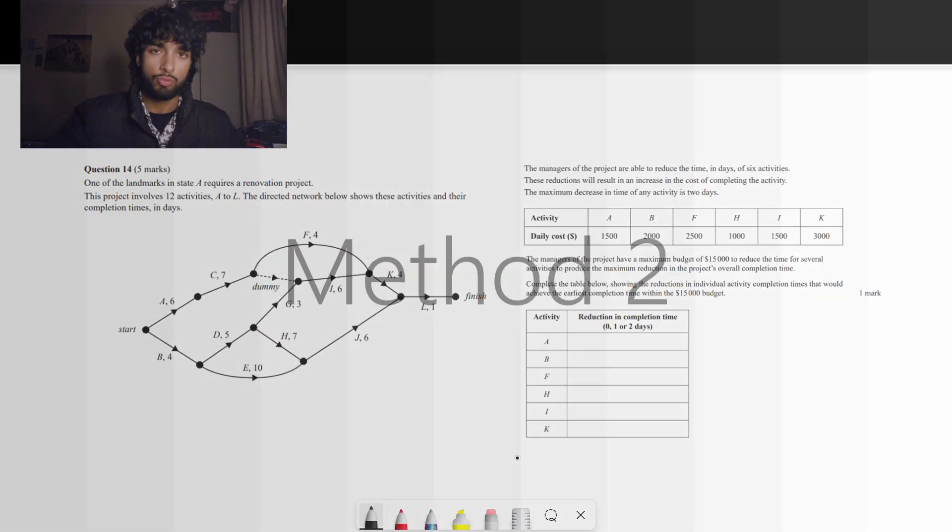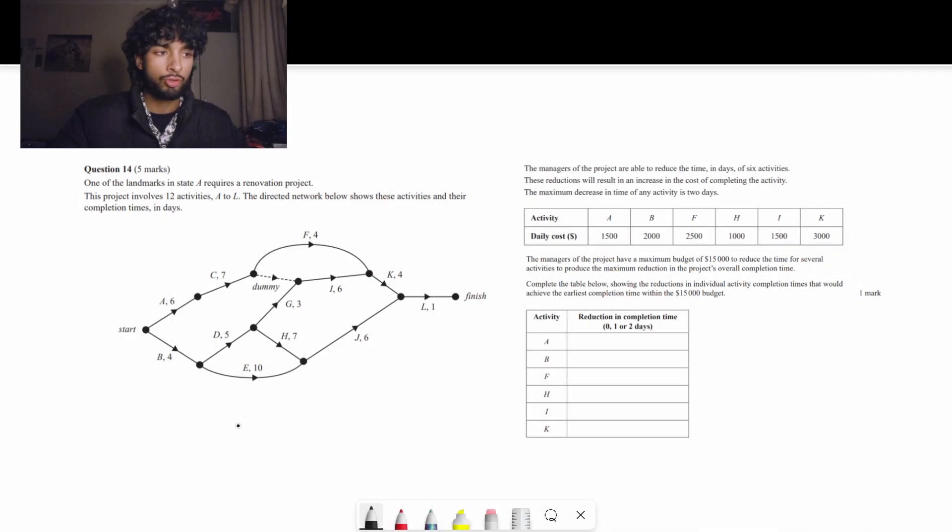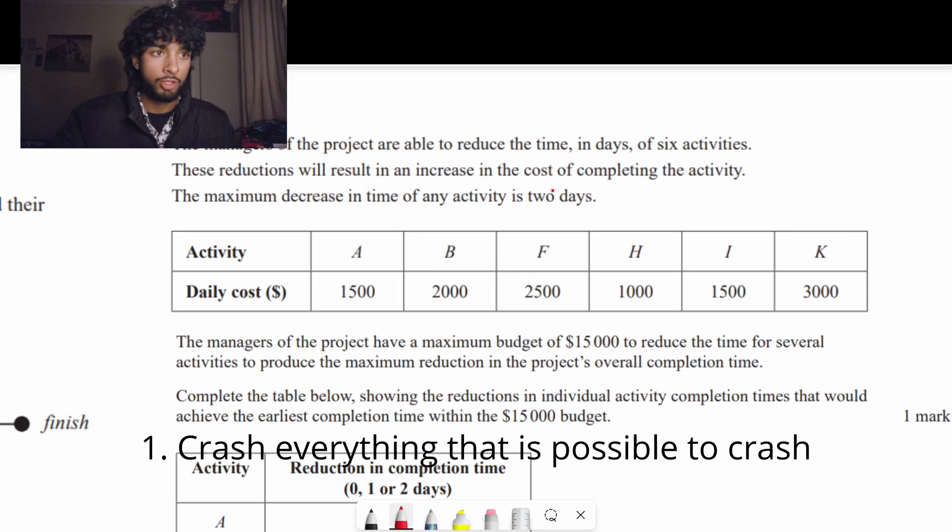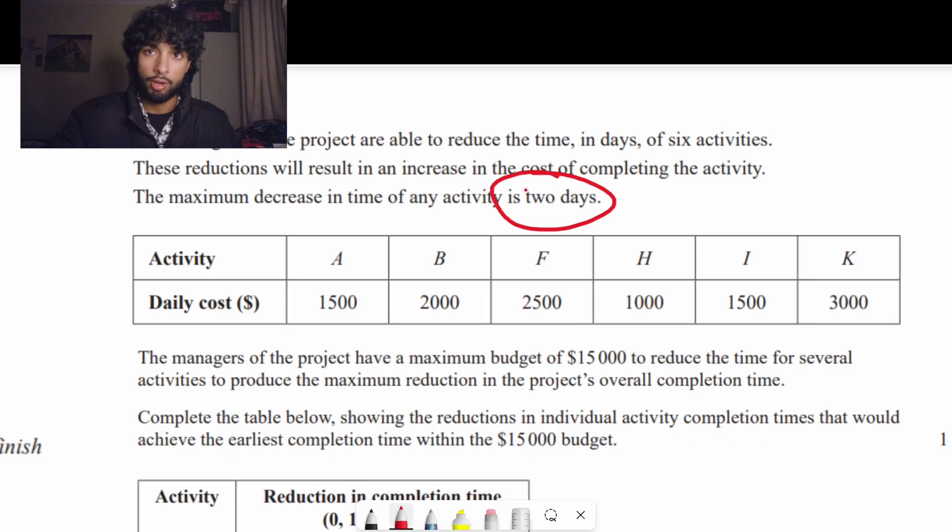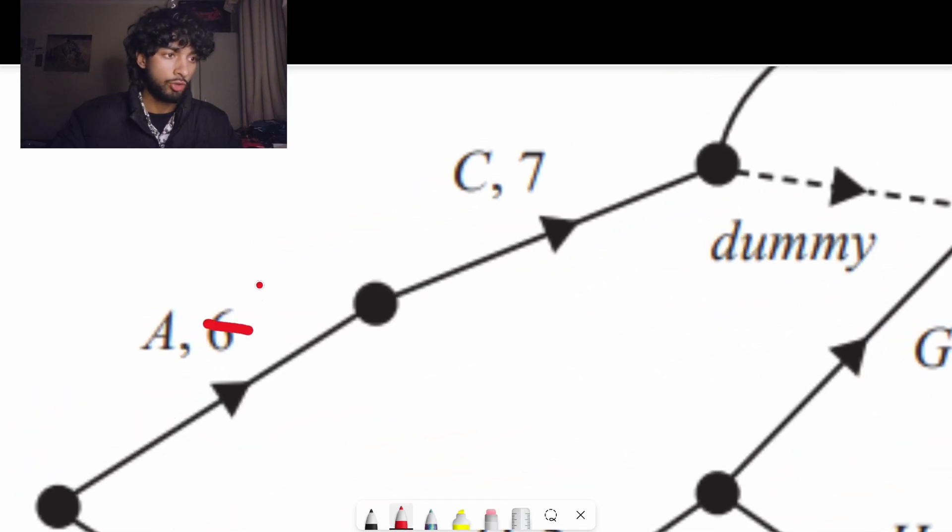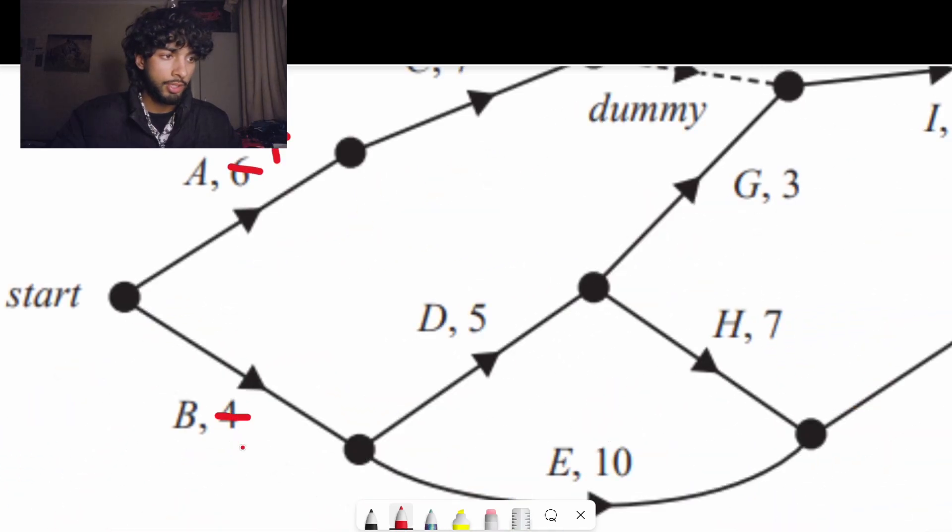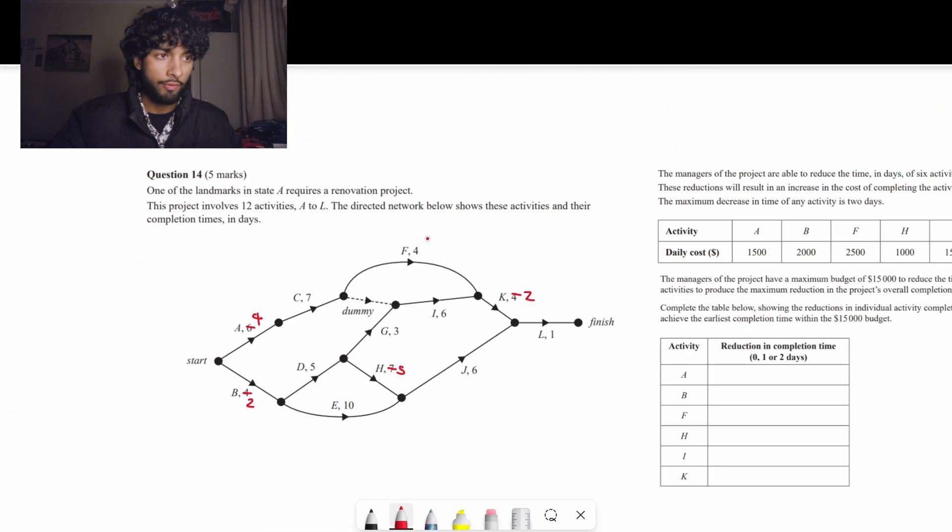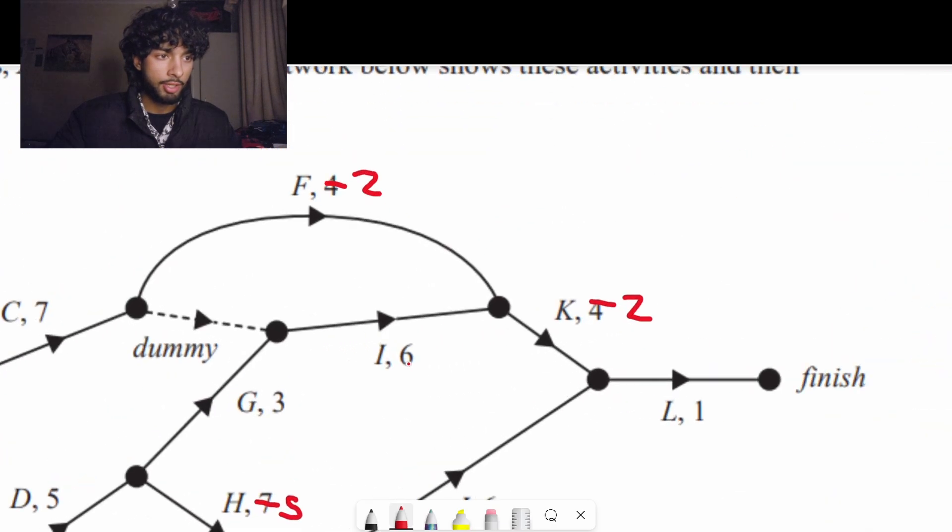Now we're going to be moving on to method 2. So method 2 has the same principles as method 1, but we're going to be doing it in the opposite order. The way we're going to apply it is we're going to crash absolutely everything, no matter what, as much as possible. So we know that every activity can be decreased by a total of 2 days. So A, B, F, H, I, K can all be reduced by 2 days.